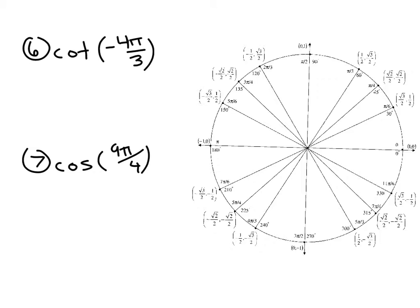So first to find cotangent of negative four pi over three. Now here again, we're given a negative angle and the unit circle, the way it's usually portrayed, gives you angles between zero and two pi, no negative angles.